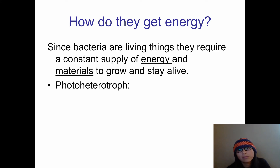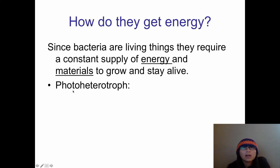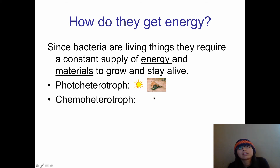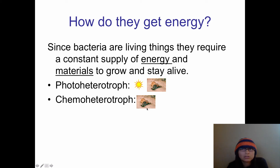The four categories describing how bacteria get energy: the first is photoheterotroph. If we break it apart — a heterotroph has to eat other living things to get its energy, and photo means light. So a photoheterotroph can do both: it can get energy from the sun or it can get energy from other living things. The second category is a chemoheterotroph, which is the same as a regular heterotroph — a chemoheterotroph eats other living things in order to get its energy.